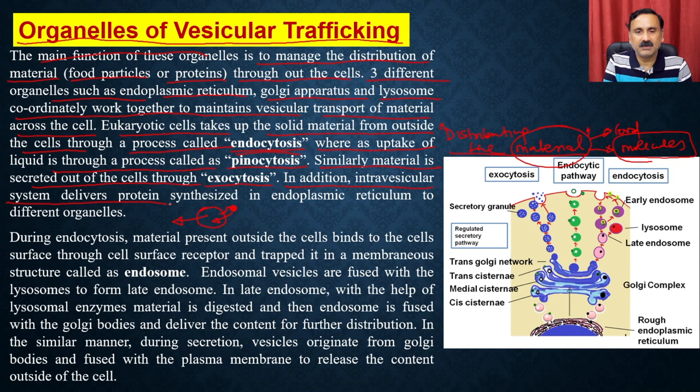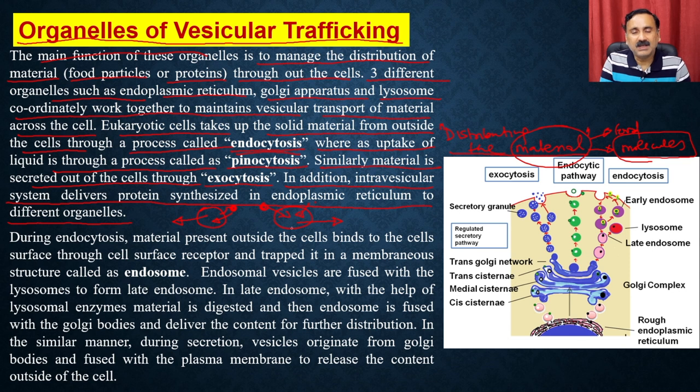The intravascular system delivers proteins synthesized in the endoplasmic reticulum to different organelles. Apart from endocytosis, pinocytosis, and exocytosis, you can also have distribution of material to different organelles. All proteins are synthesized either inside the endoplasmic reticulum or inside the cytosol, but they may be required for the lysosome, mitochondria, or chloroplast — and that movement is also the responsibility of the vesicular trafficking organelles.